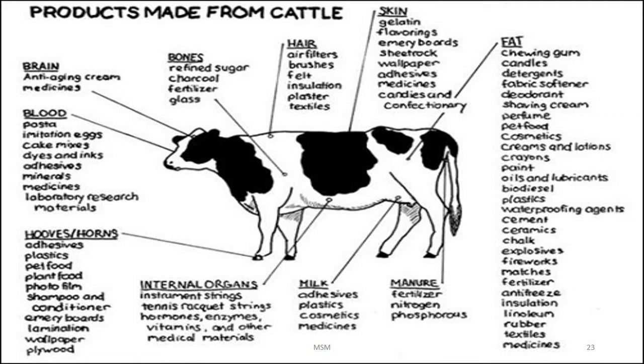The hooves and internal organs — almost everything, including the blood and brain, can be used as far as cattle today are concerned.